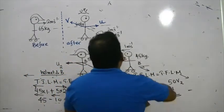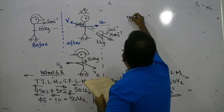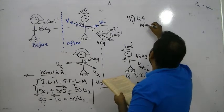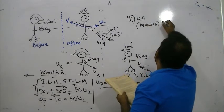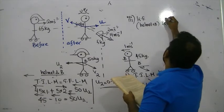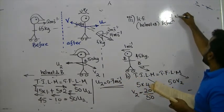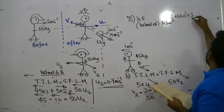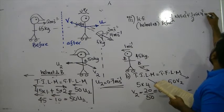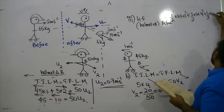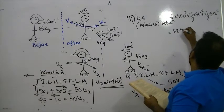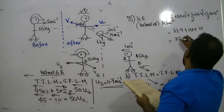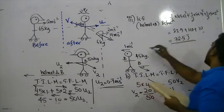They are asking for the kinetic energy of the helmet and skater B before catching. That is: half × 45 × 1² plus half × 5 × 2² plus half × 5 × 4², which simplifies to 22.5 + 10 + 40 = 72.5 joules.